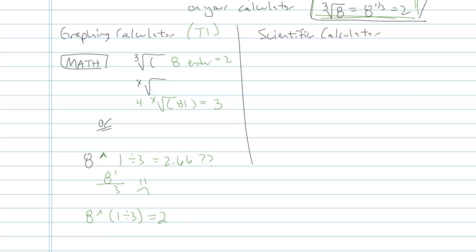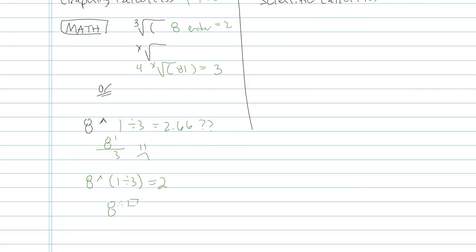Depending on what model you have, some of them, when you type in 8 and then the caret, it'll give you a little box up in the exponent, and you can type in 1/3 all up there in the exponent, and you'd have to use arrow over to get down out of the exponent. So practice on your own individual calculator finding out how to do the cube root of 8 and 8 to the 1/3 power.